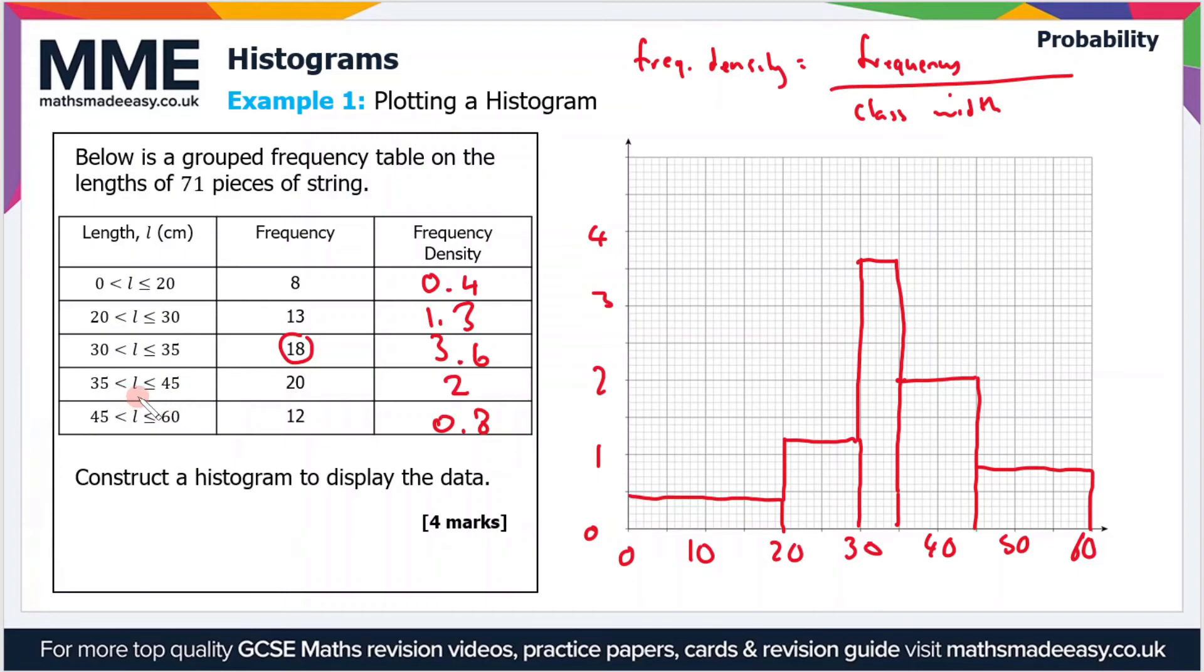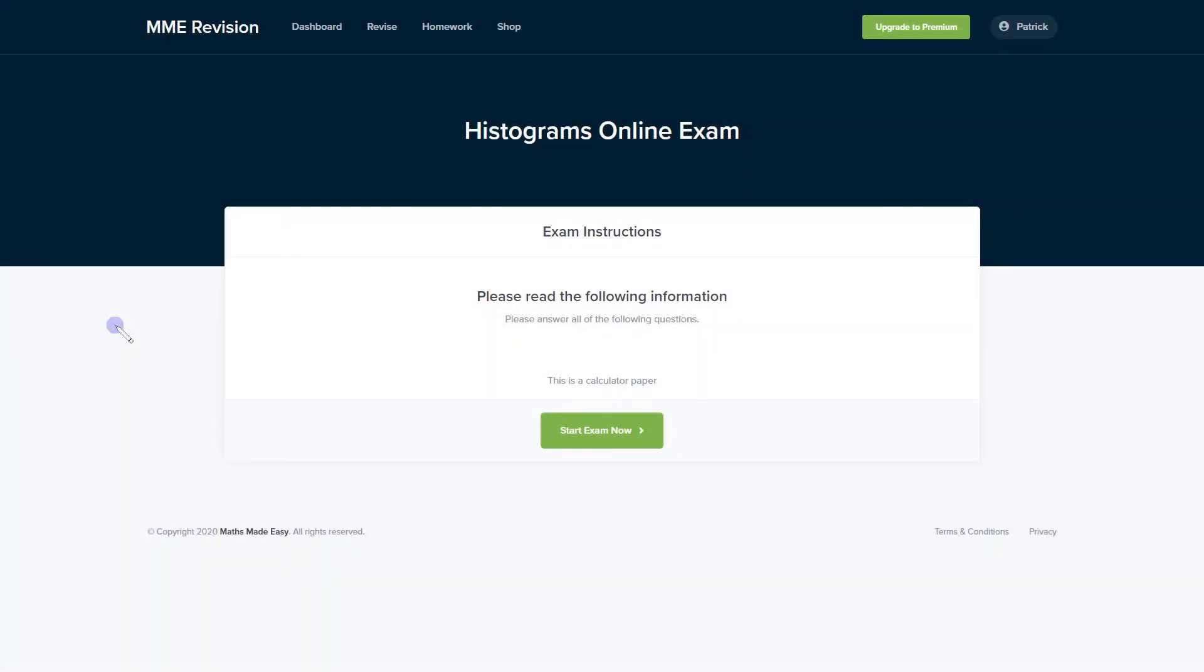The same for the next group, which has a width class with a gap of 10. The frequency is 20, so we still have quite clustered data. Those are the two highest frequency density values on the histogram.